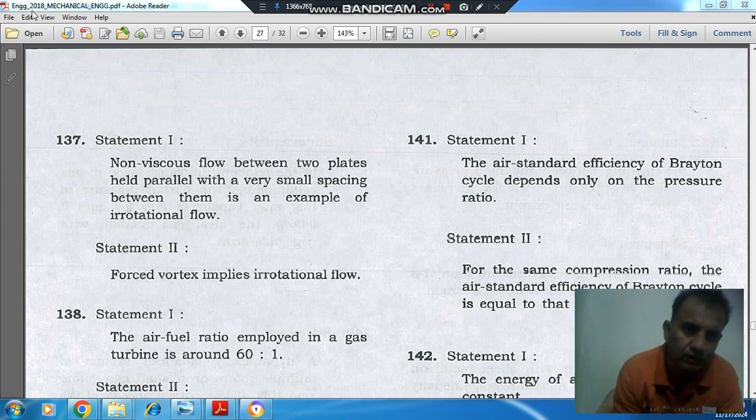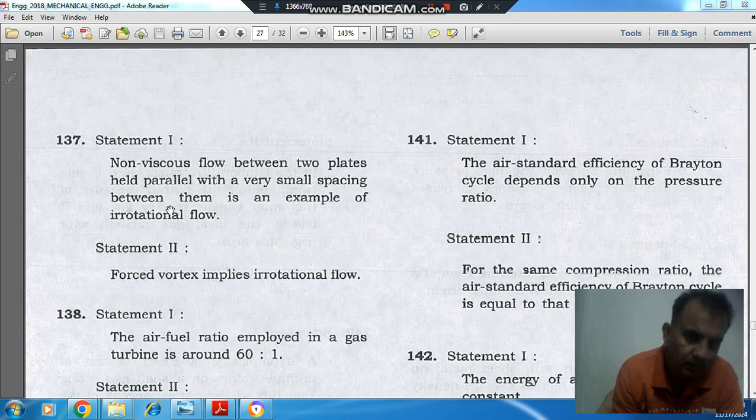Hello, welcome again. We are solving engineering entrance Pre-2018 mechanical engineering paper, question number 137. Statement 1: Non-viscous flow between two plates held parallel with very small spacing between them is an example of irrotational flow. Statement 2: Forced vortex implies irrotational flow.